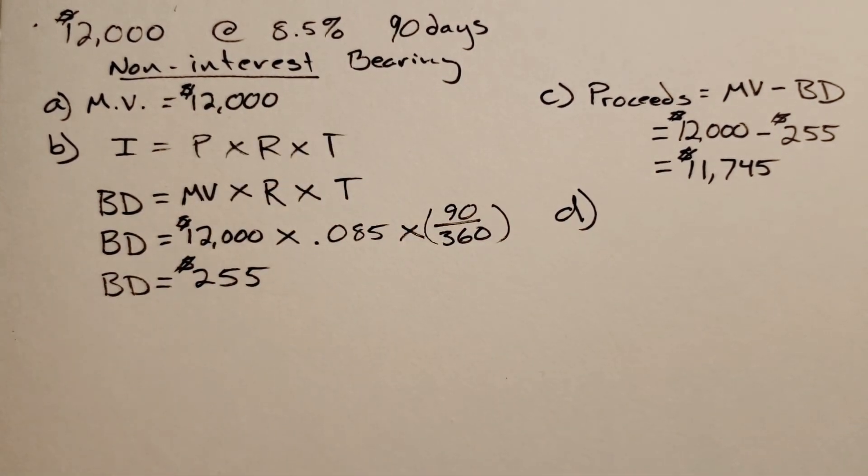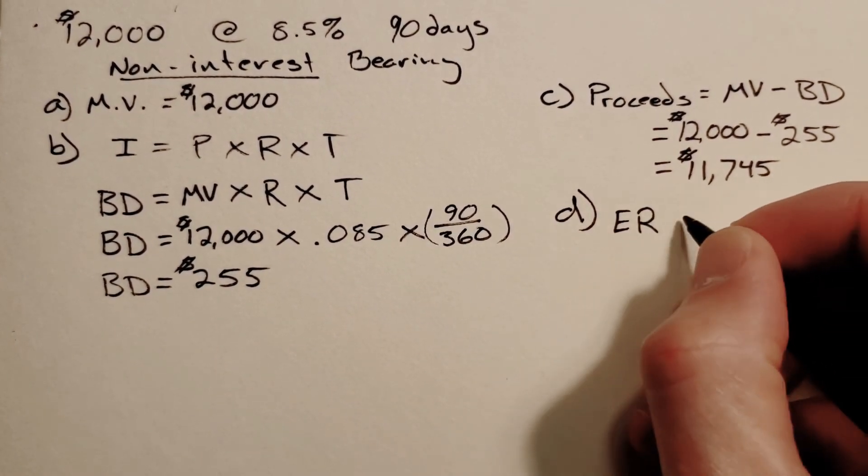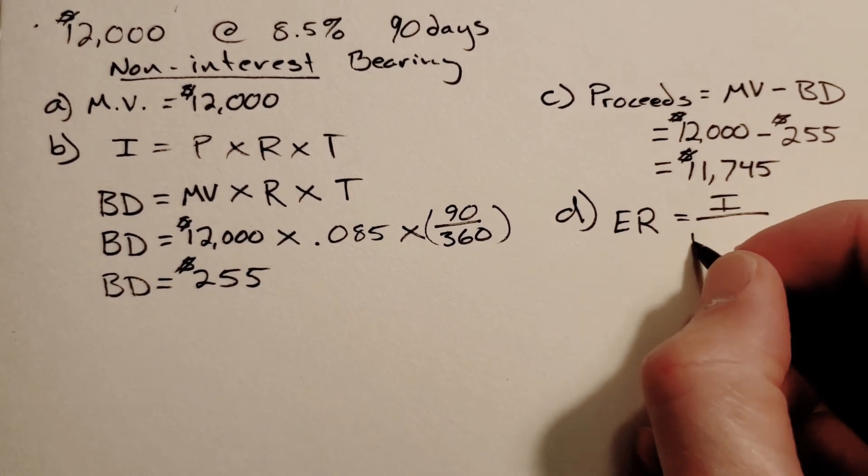The effective rate is basically a straightforward equation: your interest divided by your proceeds.